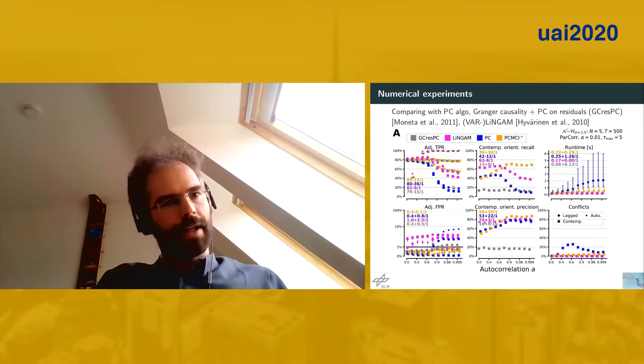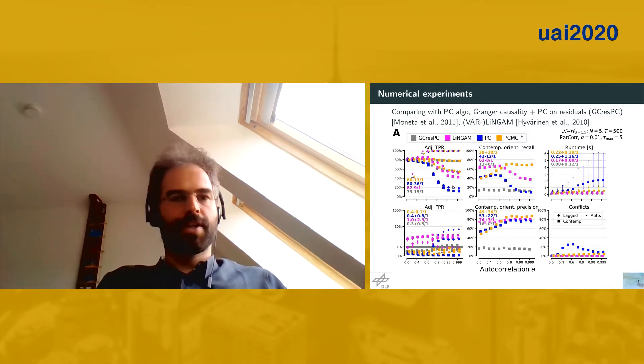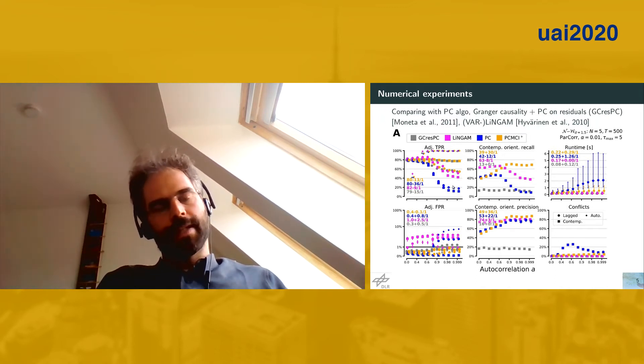Closing with some numerical experiments, in comparison with Granger causality, PC on residuals, and Varlingam, a method that assumes non-Gaussianity. Our model setup also has non-Gaussian links. Shown on the left are adjacency results. We have high true positive rate for contemporaneous links, as hoped. We have controlled false positives, and for recall of contemporaneous links, we get high recall with increasing autocorrelation, while all other methods suffer from high autocorrelation. Precision is increasing for all methods. This is one example of many found in the full paper.